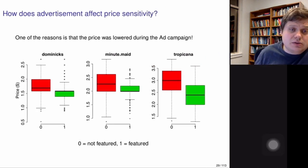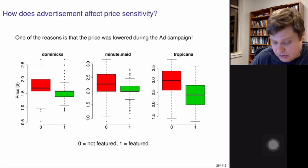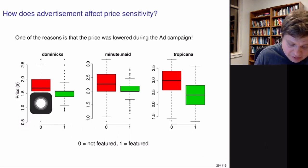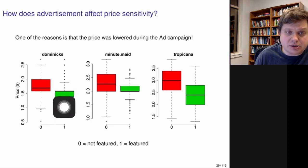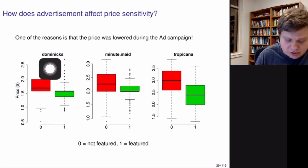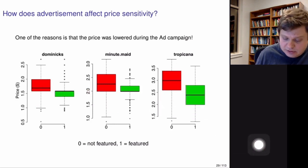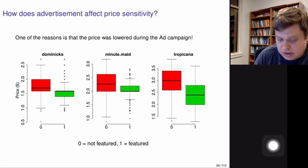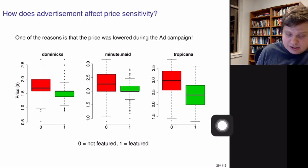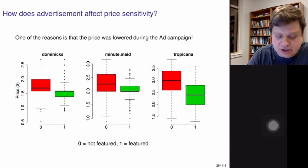Another reason is that the price was often lowered during the advertisement campaign. Looking at the data, the advertised price (green box) is lower than the original price (red box) for all three brands at Dominic's — a big grocery store chain in Chicago. When you advertise a product, it usually comes with some type of price incentive, like a one-dollar-off coupon. Once the price goes down, people become more sensitive to changes in the price.